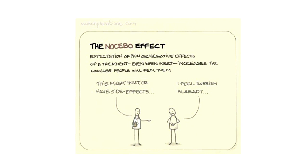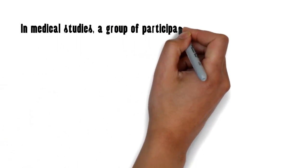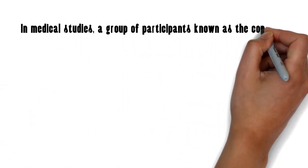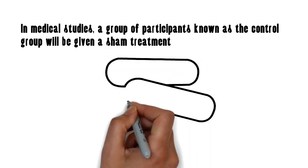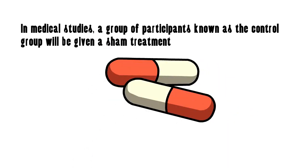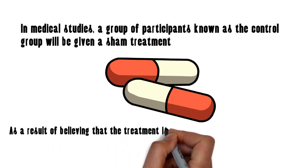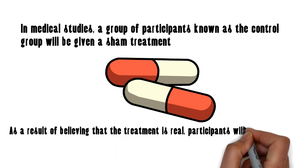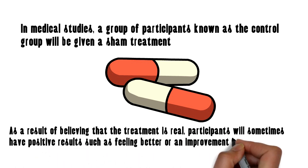Even though the medication they are taking is actually an inert substance. In medical studies, a group of participants known as the control group will be given a sham treatment — often a sugar pill — that they believe is the real treatment. As a result of believing that the treatment is real, participants will sometimes have positive results such as feeling better or an improvement in their symptoms.